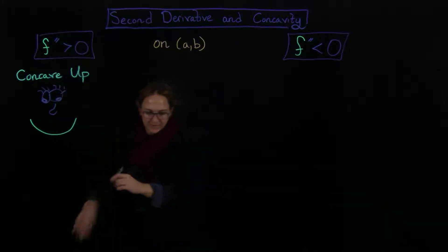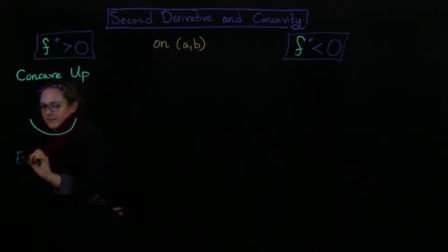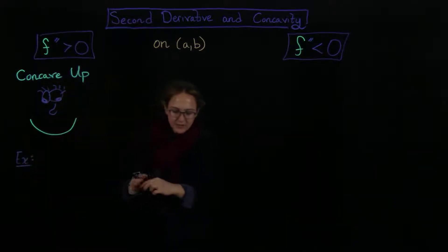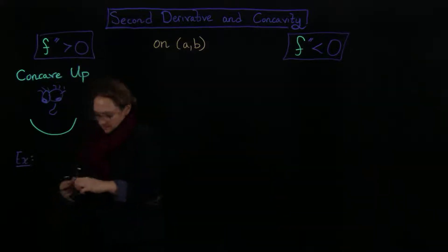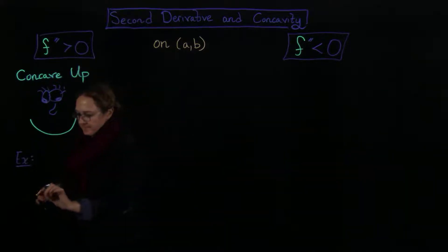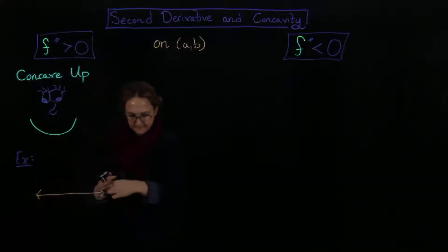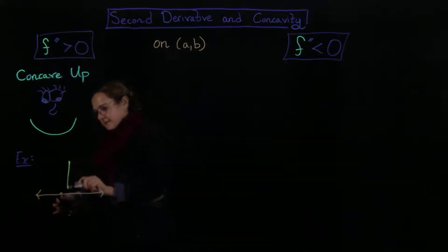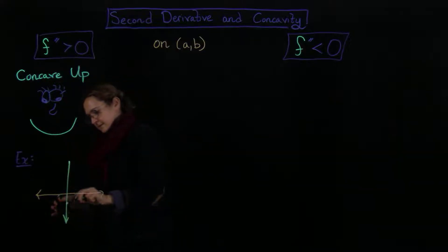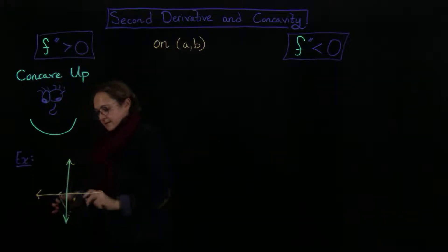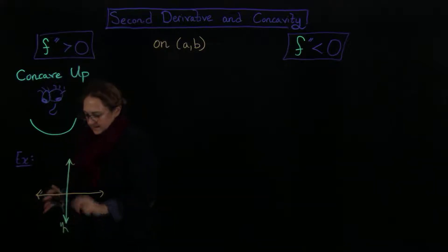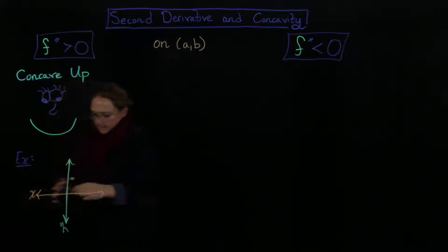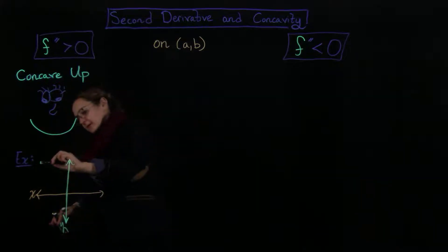Let's look at an example, because maybe that'll illuminate a little bit. So let's look at the function y equals x squared. We have the graph of that, with a y-axis and an x-axis.